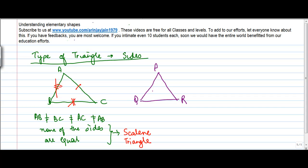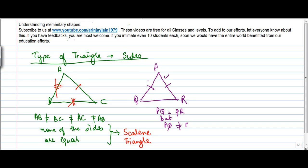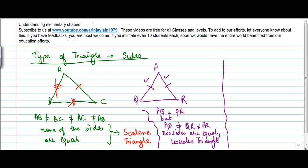Now let's see another case with triangle PQR. Here, PQ is equal to PR — this side is equal to this side — but PQ is not equal to QR, which is not equal to PR. So two sides, namely PQ and PR, are equal. If two sides are equal, the triangle is called an isosceles triangle. Note that it's only two sides which are equal, not all three.